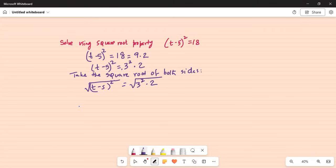Now I want to mention that square root is nothing but exponent half. So (t-5)², the whole thing is exponented by half. Square root is identical to exponent half and this is also 3² times 2 exponent half.